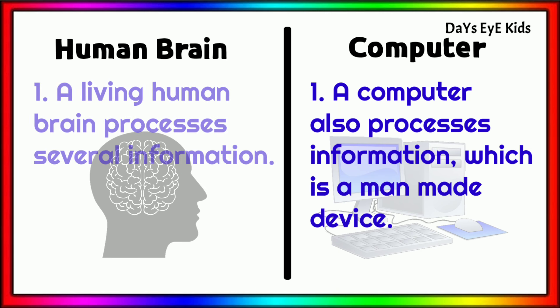Human Brain: A living human brain processes several information. Computer: A computer also processes information which is a man-made device.